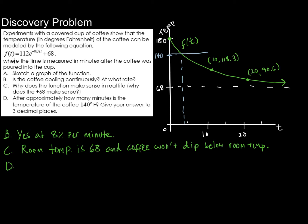So let's think about what we just said. We're looking for when f of t, our function here, is equal to 140. So what we're going to do is we're going to set f of t equal to 140. This is what we want to solve. Okay, well, what does that look like? f of t is the function 112e to the negative 0.08t plus 68, and we are setting that equal to 140.